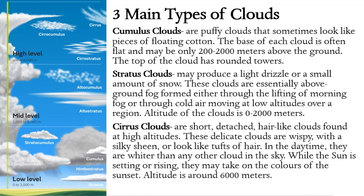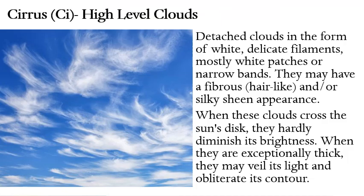Another type of cloud is cirrus clouds — high-level clouds. These are short, detached, hair-like clouds found at high altitudes. The most common description of a cirrus cloud is its feather-like structure or feather-like appearance — forming like a strand of hair, a brush-like structure, or even a feather. When you see a feather-like cloud in the sky, that is a cirrus cloud.